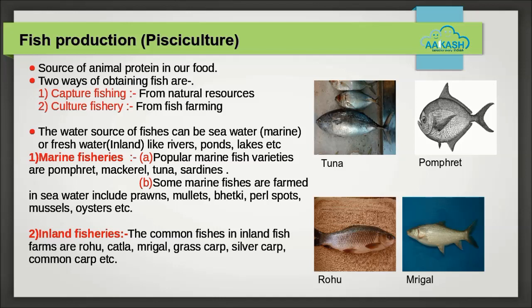Freshwater fisheries: India has a large number of freshwater sources like rivers, ponds, and lakes. Capture fisheries are poor in freshwater, so major fish production from freshwater is carried out through culture, called aquaculture. Sometimes fish farming is also carried out in paddy fields. Common freshwater fishes are rohu and mrigal.